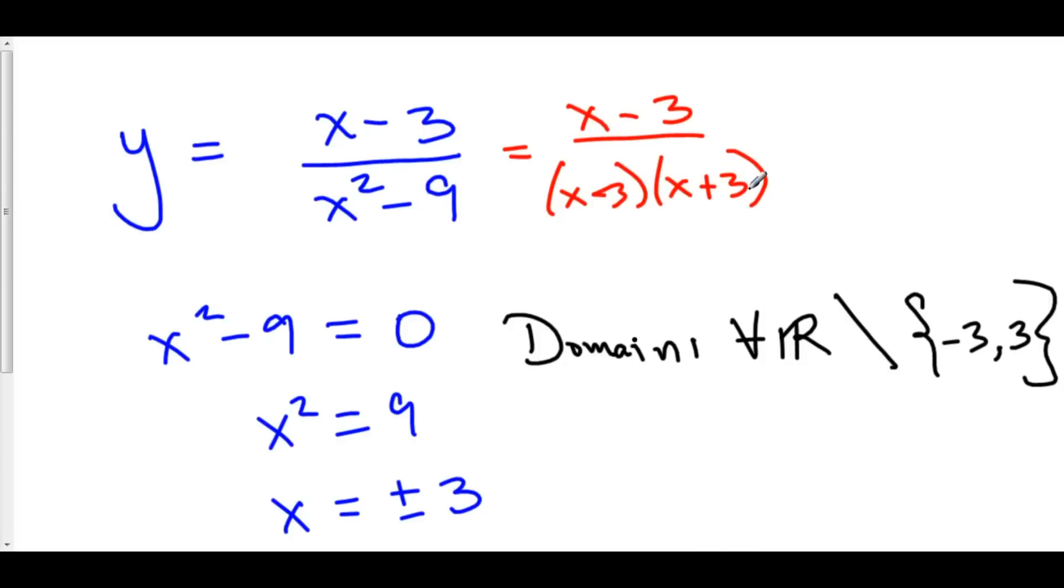They might be saying, but wait a minute. Don't the x minus 3s cancel out and therefore 3 can be a solution? No. If it wasn't in the beginning, it's not in the end. That's all there is to it. The fact that the x minus 3s cancel out actually will be important when we talk about limits.